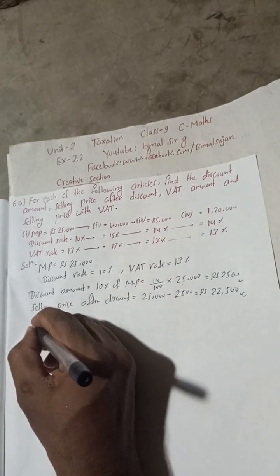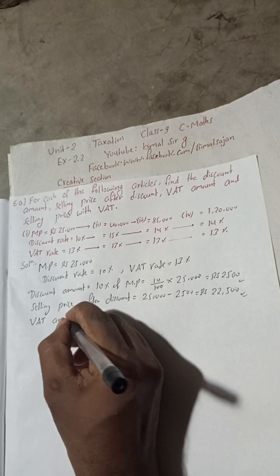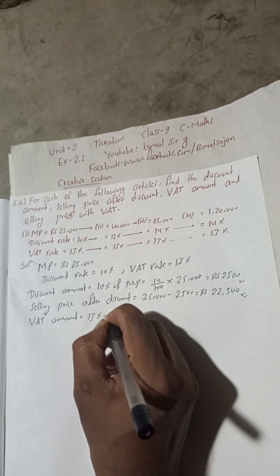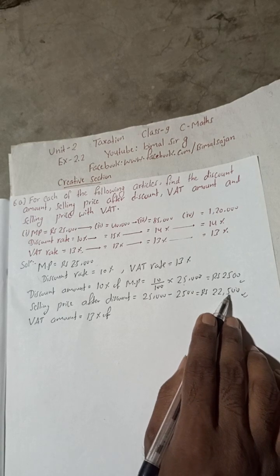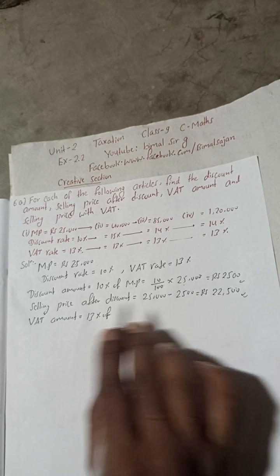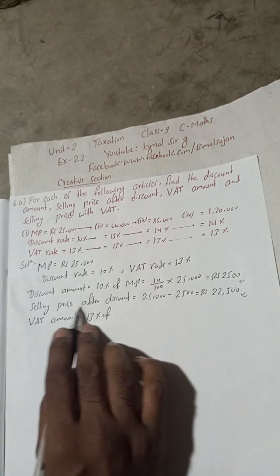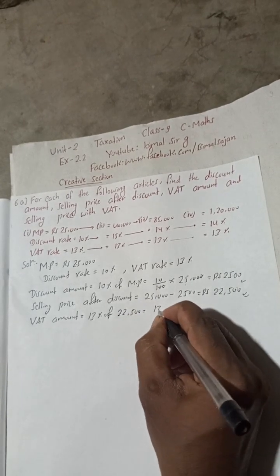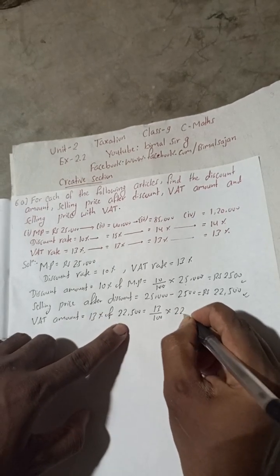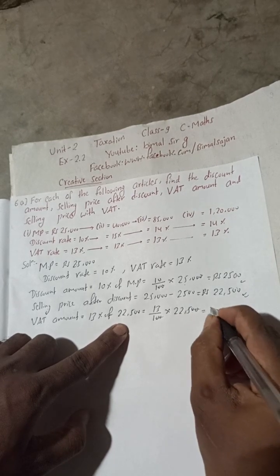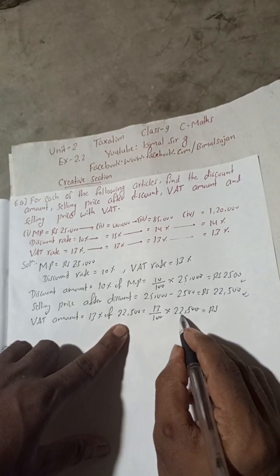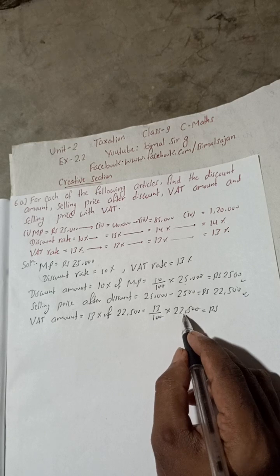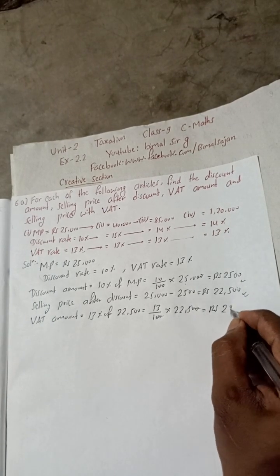Now VAT amount. VAT rate is 13%, so VAT amount equals 13% of the selling price after discount. That is 13 divided by 100, multiplied by 22,500. Cancel the zero: 225 multiplied by 13 gives Rs 2,925.